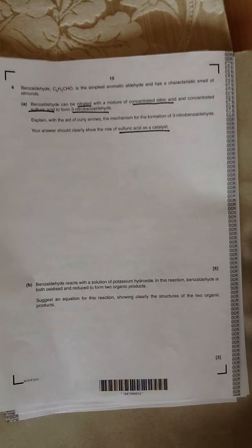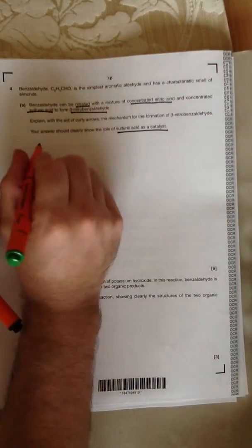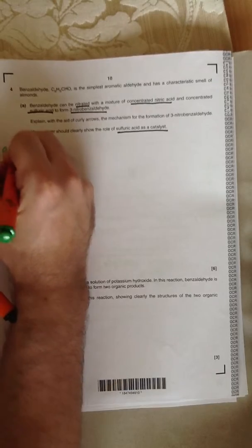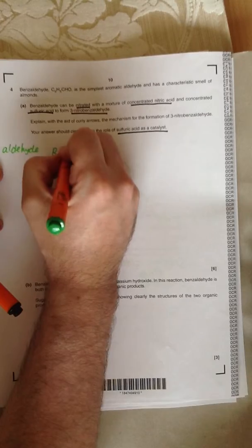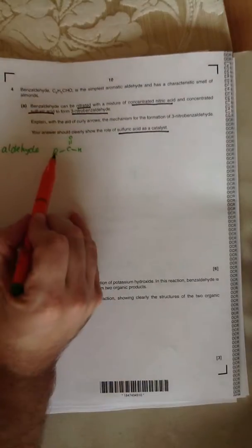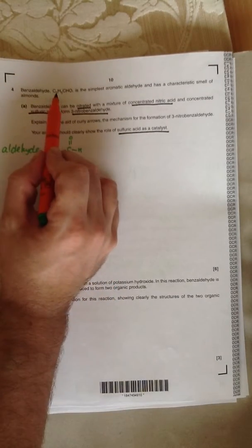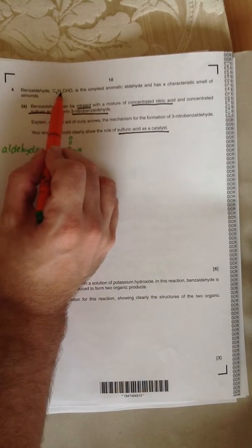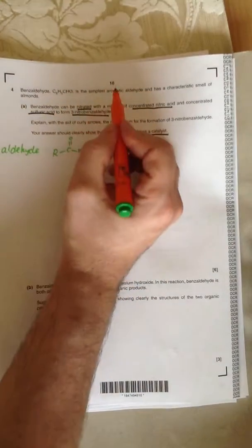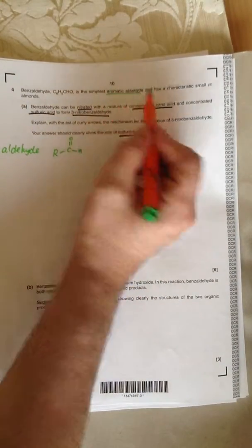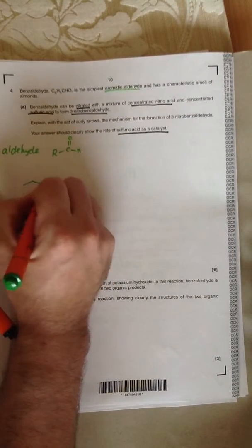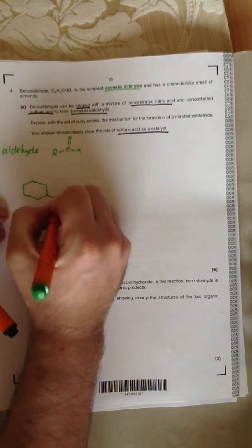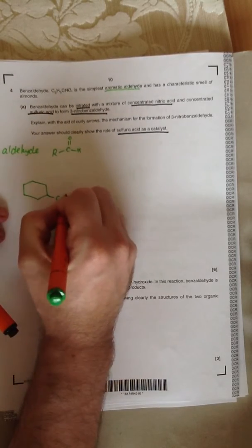The first thing we need to do is draw out benzaldehyde. We know that an aldehyde is this type of compound. We have an R-group, a C double bond O, bond to H. How do I know what the R-group is? Well, the question says it's C6H5CHO and it reinforces it by saying it's an aromatic aldehyde. So our benzaldehyde looks like this: C double bond O, bond to H.